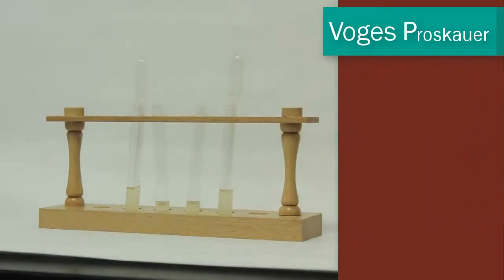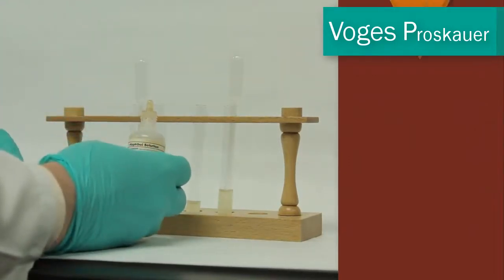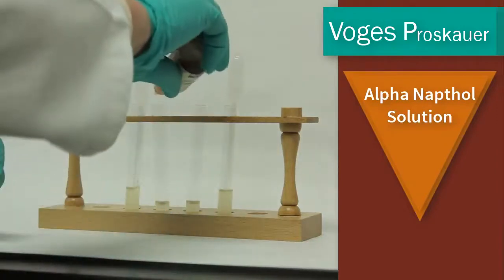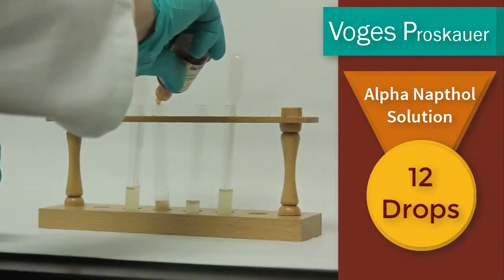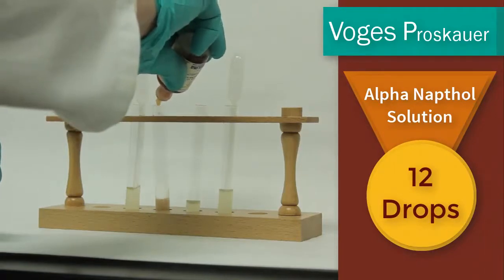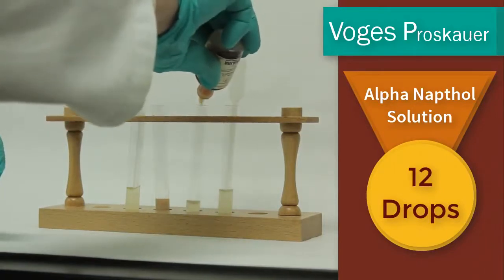After that you're going to add the first reagent which is called alpha naphthol solution. You need to put exactly 12 drops of this solution in each tube.